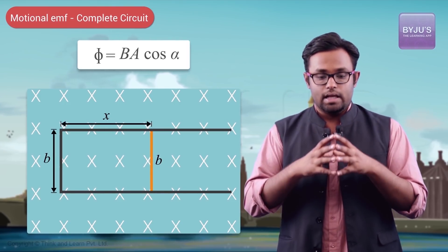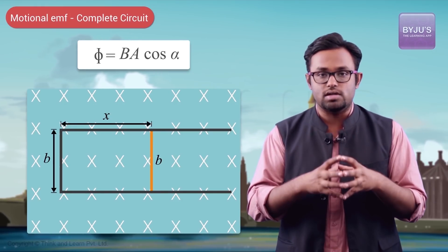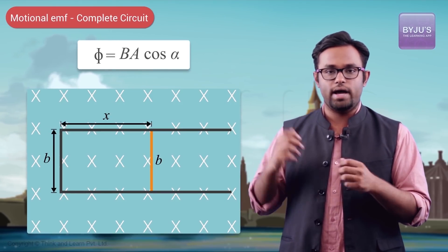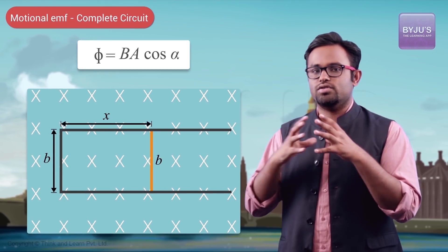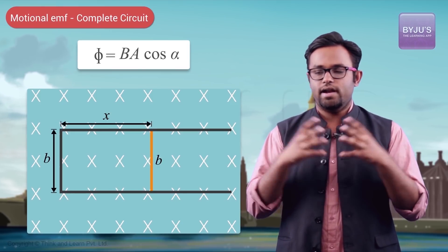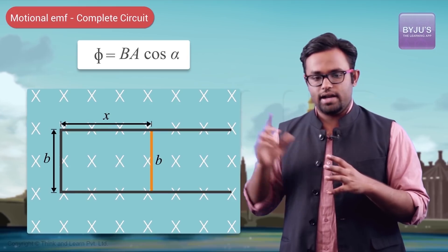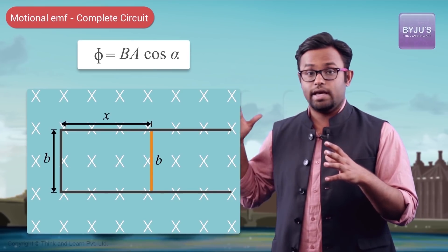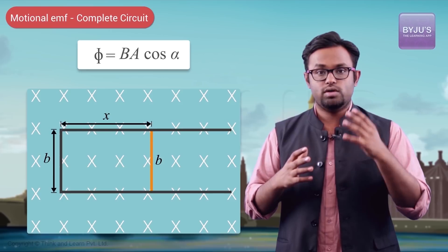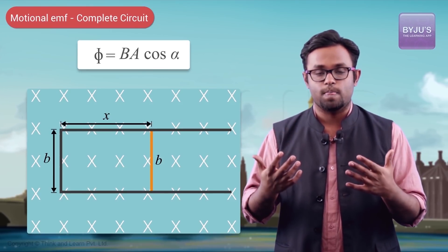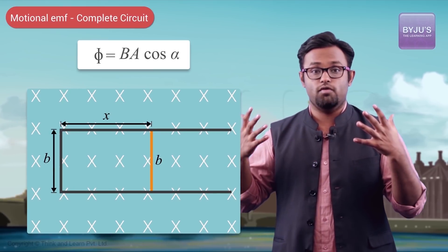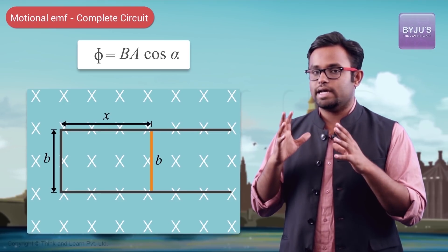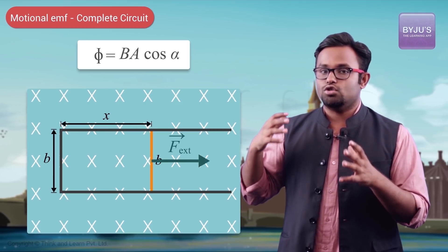Another way is to go back to the basics of Lenz's law, which says that a current gets induced in such a way that it opposes the cause of the change in flux. The cause of the change in flux is the moving of that wire. So a current is supposed to get induced in such a way that it opposes that motion. Force can oppose motion, and this wire carrying a current in a magnetic field will definitely feel a force. The direction of the current determines the direction of the force.